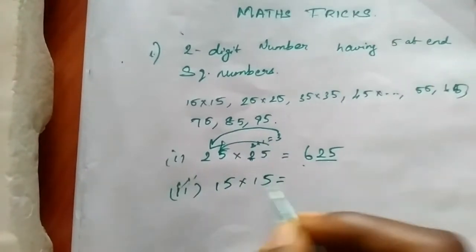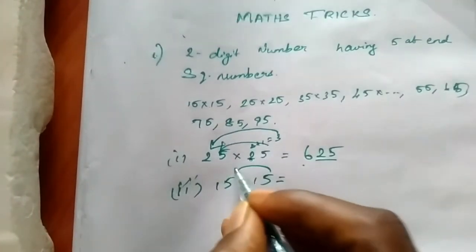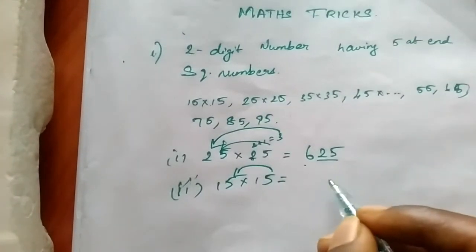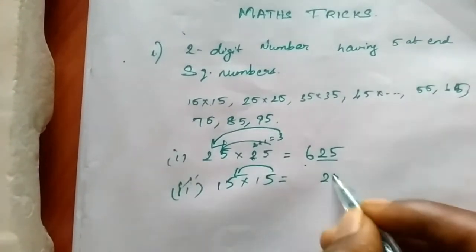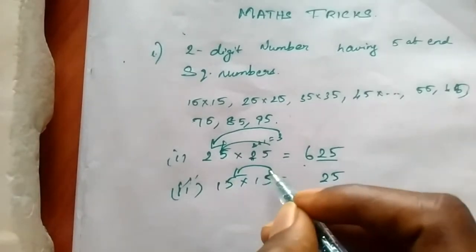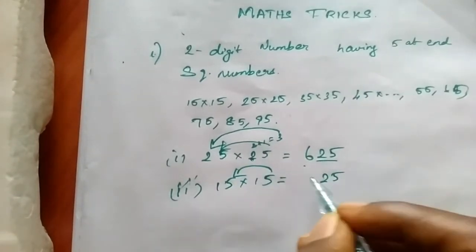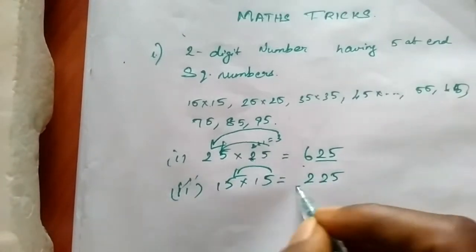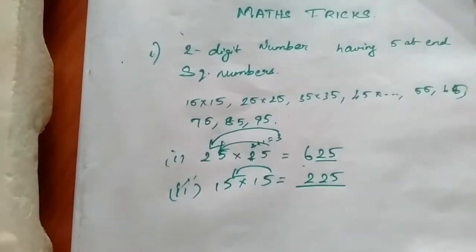Let's try 15 x 15. The last part is 25. Then 1 plus 1 is 2, and 2 x 1 is 2. So 15 x 15 is equal to 225.